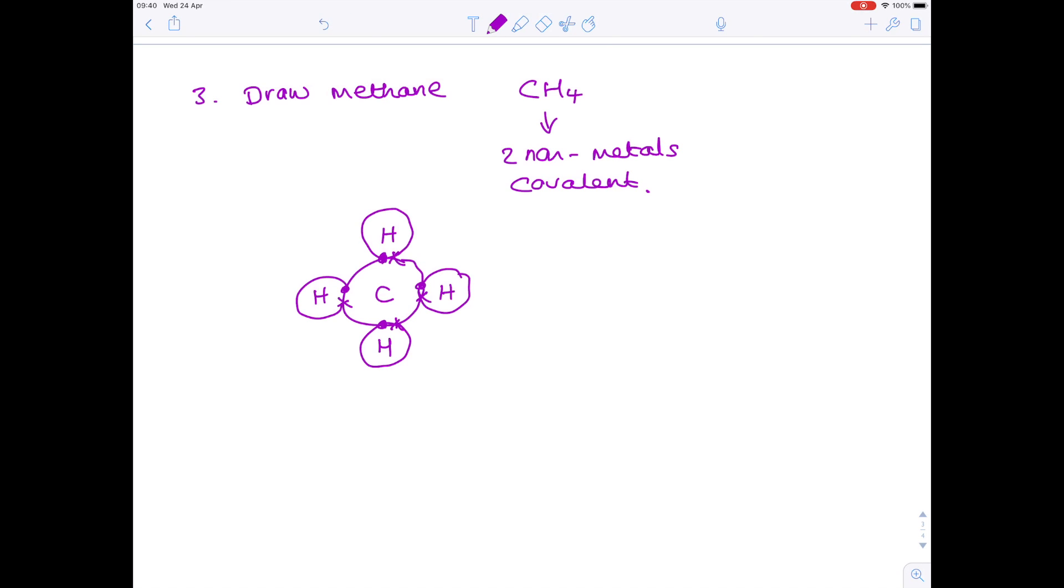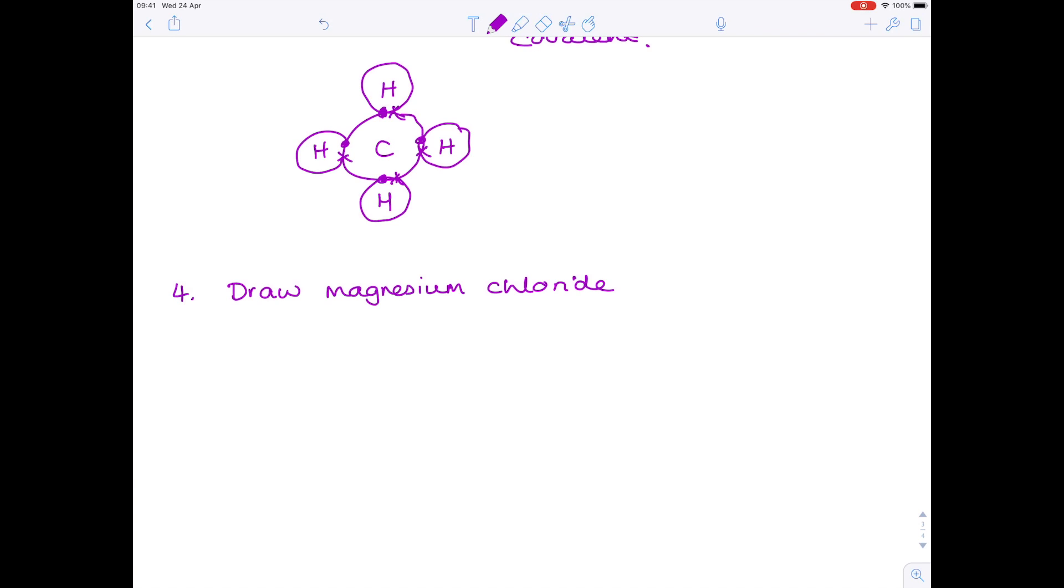Now we're being asked to draw magnesium chloride. We have a metal and a non-metal, which is why we have ionic bonding. And this is how your final answer should look.